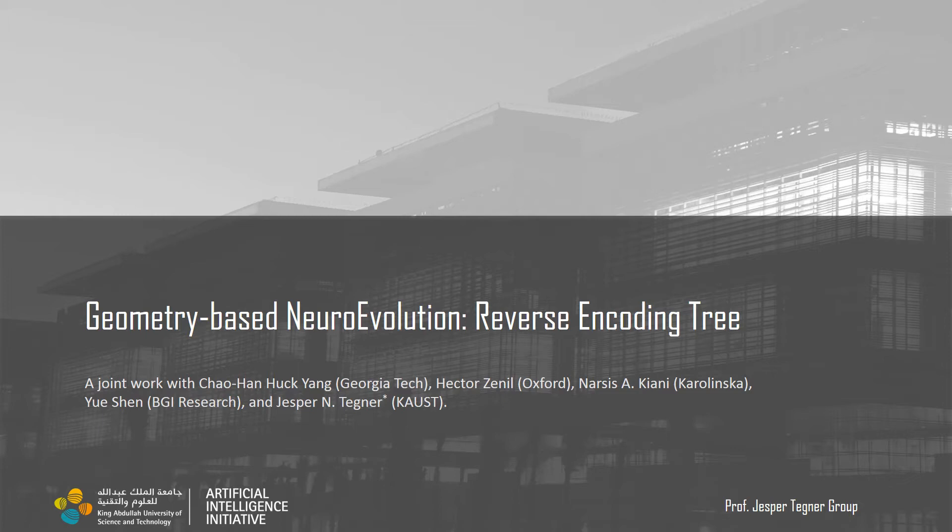There are three key points of reverse encoding tree. One, use geometry search to speed up individual evolution through evaluating some potential better individuals at earlier stage.